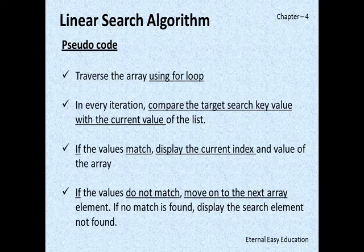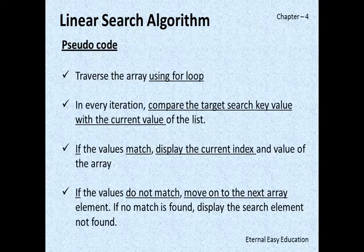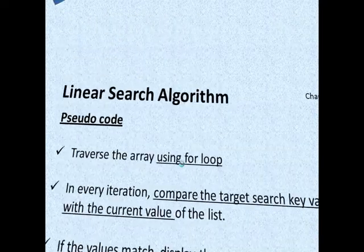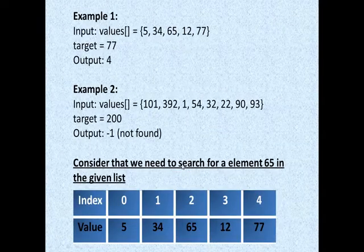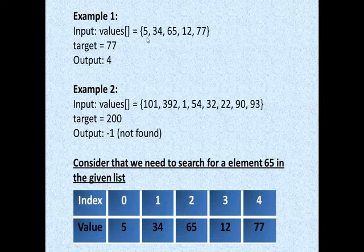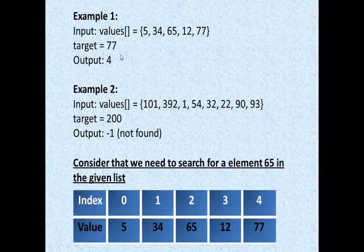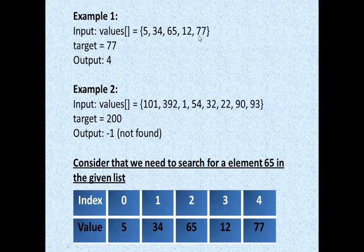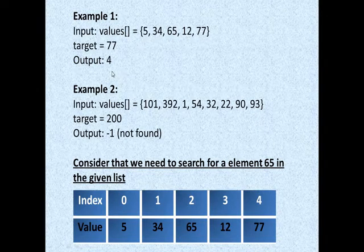For example, if the list is having 5, 34, 65, 12, 77, then if the search element is 77, the output is 4, because the index values are 0, 1, 2, 3, 4. Index value is 4.